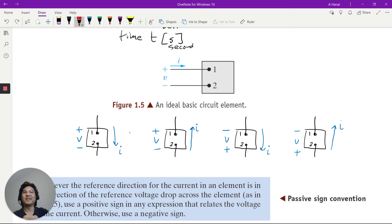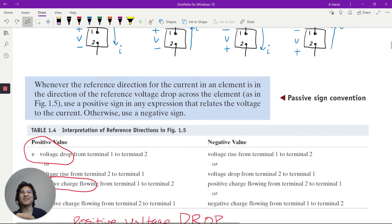Notice that for this picture, this way is positive, this way is positive. That's what this whole business means. The direction for the current is in the same direction as the voltage drop. That is considered positive.